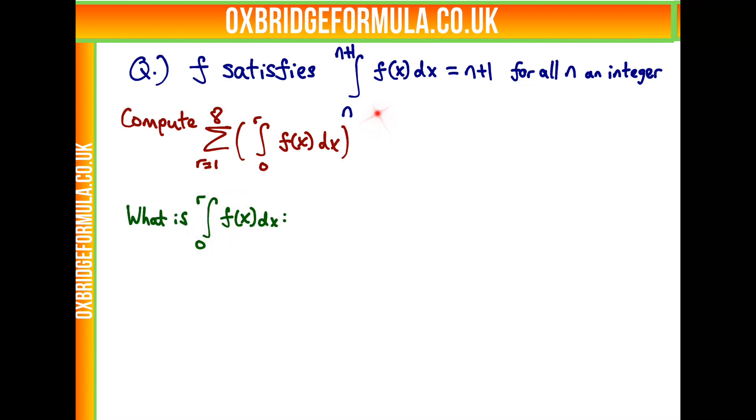From the identity we're given in the question, we know what the integral of f is from set limits - from n equals 0 to 1, from 1 to 2, 2 to 3, and we can do the same thing for all values of n.